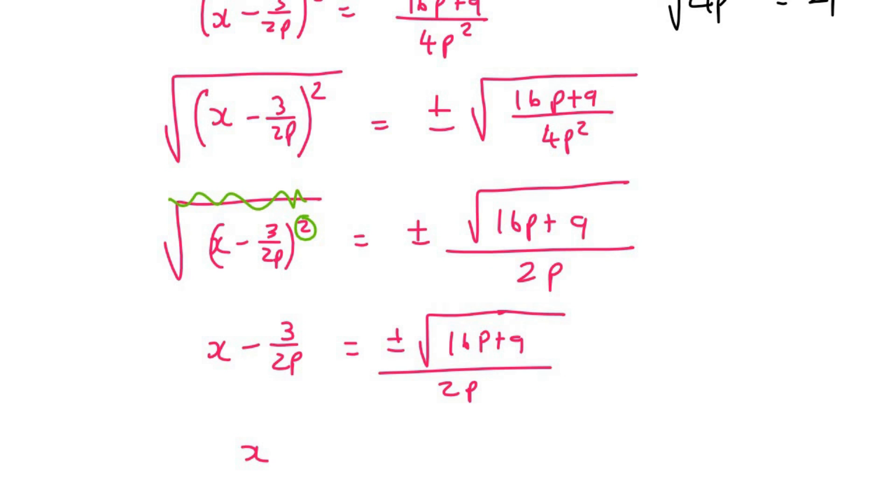So now I'm going to take the minus 3 over 2p over, and I'm going to put it in the front. You don't have to, but you could also put it at the end, it doesn't really matter, and then plus minus the square root of 16p plus 9 all over 2p.